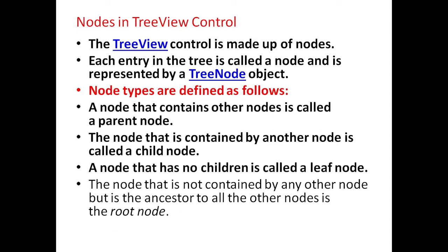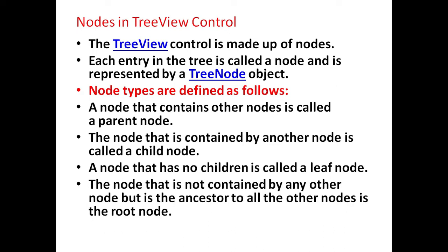A node that has no children is called a leaf node. The node that is not contained by any other node, but is the ancestor to all other nodes, is the root node.